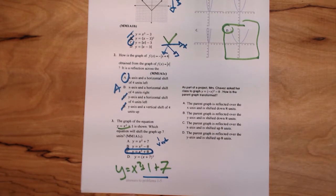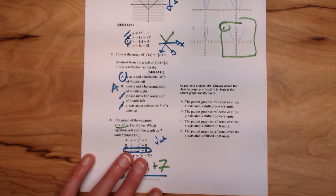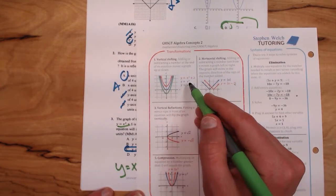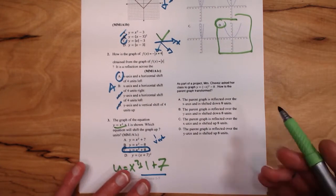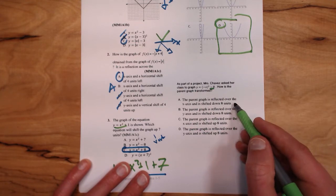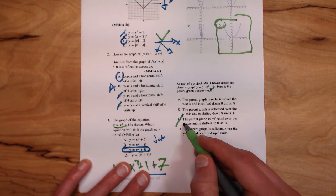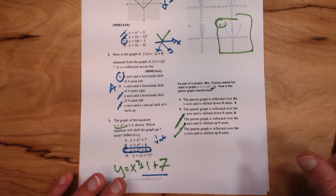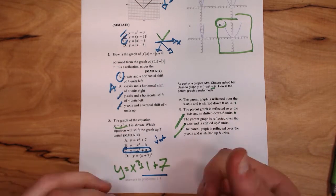As part of a project, Miss Chavez asked her class to graph y = -x² - 8. How is the parent graph transformed? Let's deal with what I consider the easier part first. We've already learned that if we add or subtract a number from the end of a formula, it's going to move up or down. The -8 is going to move the whole graph down 8. So I see a down 8 here, I see a down 8 here, I see two up, so these are gone. Eliminating bad answers is always a good idea. We've eliminated two bad answers, that's great.